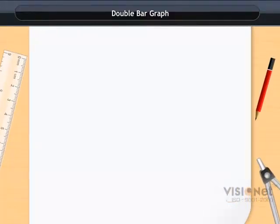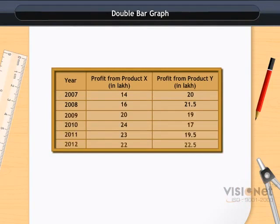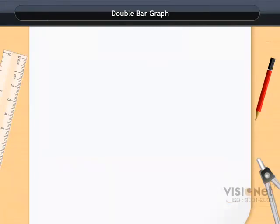Double bar graph. Consider the following two data as given. Here we measure the profit in lakh of two different companies from 2007 to 2012 per annum.